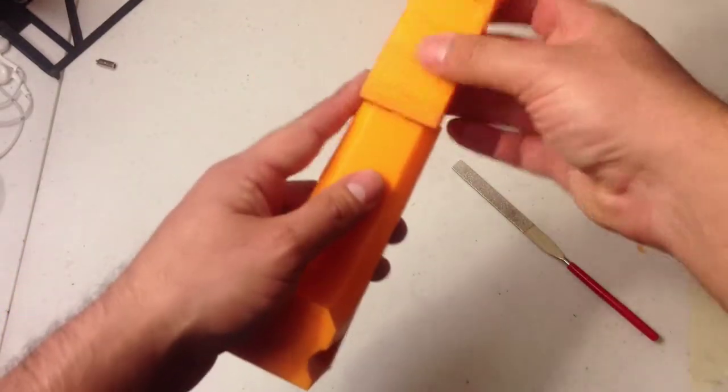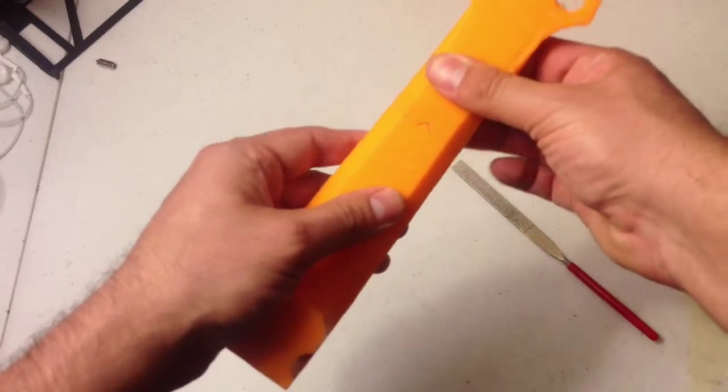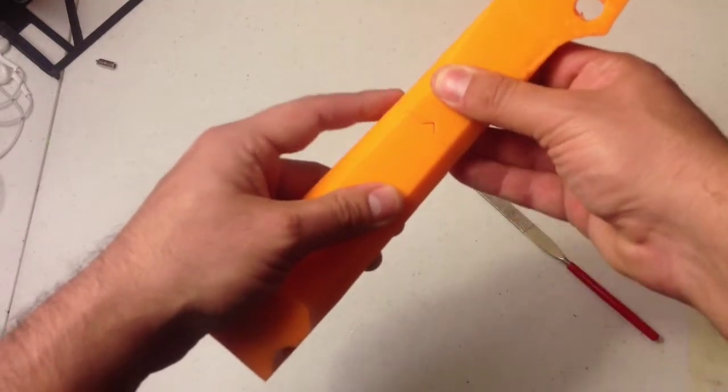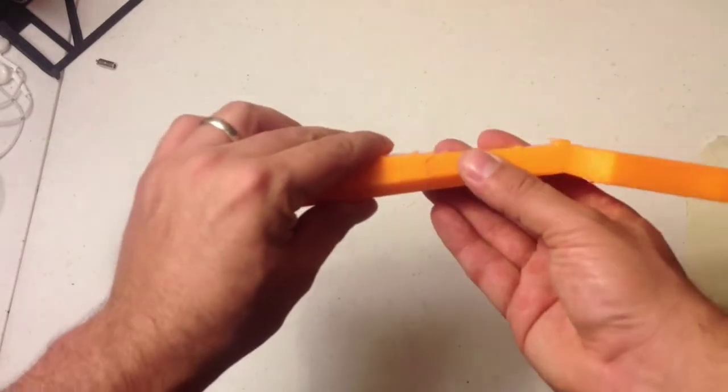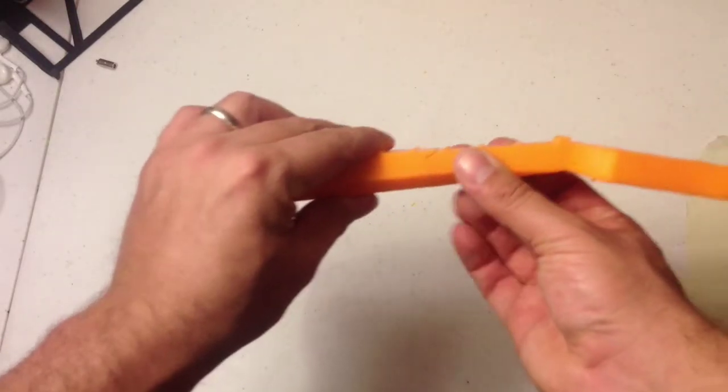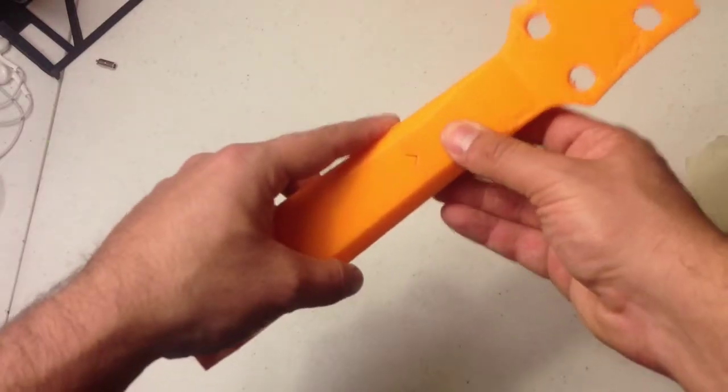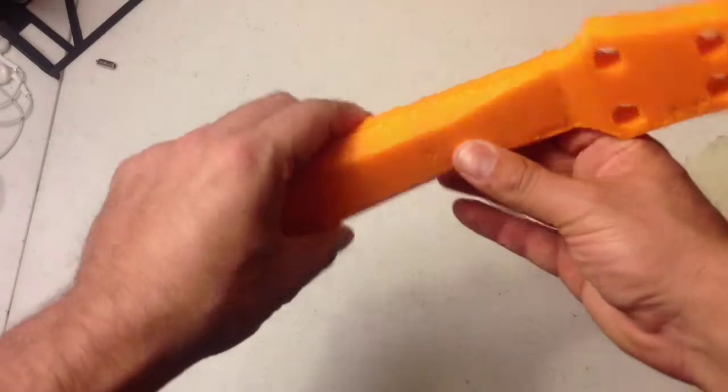So, one thing too, before I do this, when you're prepping, you want to make sure there's no gaps at all. Again, this is not going to quite fit when you first print it. It's not going to fit together. You have to sand it. And it's a little bit tedious, but keep sanding and test fitting, because you really want this to fit perfectly.